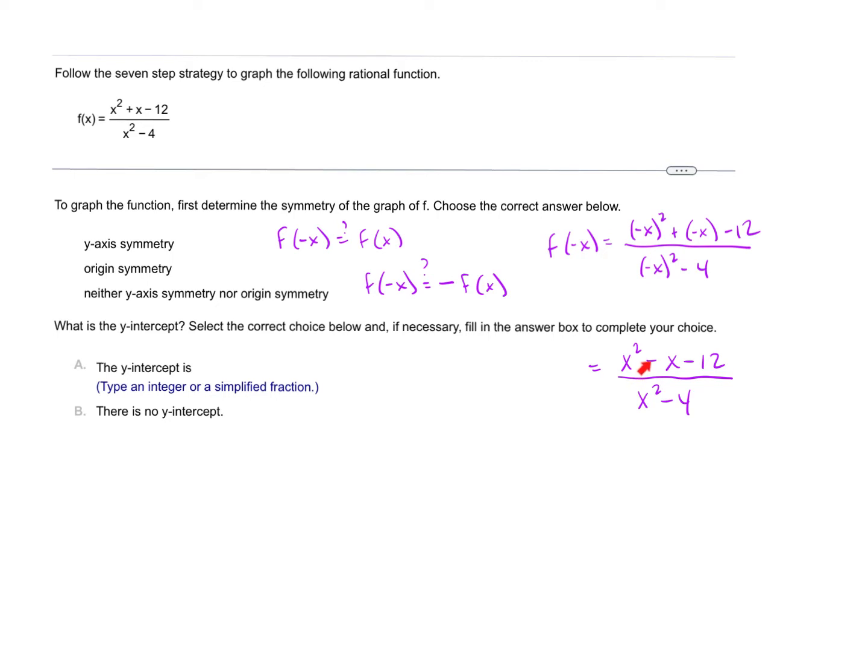The question is, is this exactly the same as what we started with? It's not because I've changed one sign. This plus sign became a minus. Is this exactly the opposite? Did every single sign change? No, so it's not exactly the same, it's not exactly the opposite. So this has neither y-axis nor origin symmetry.